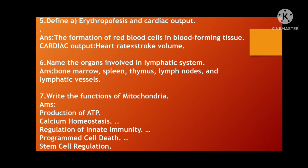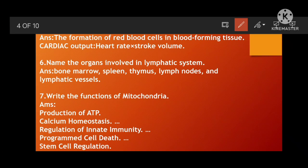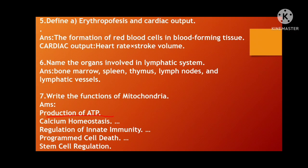Next: Write the functions of mitochondria. These include production of ATP, calcium homeostasis, regulation of innate immunity, and programmed cell death — also known as apoptosis. When apoptosis occurs, mitochondrial functions get diminished. Under some conditions, mitochondria will prevent apoptosis or programmed cell death. Stem cell regulation is also one of the mitochondrial functions.